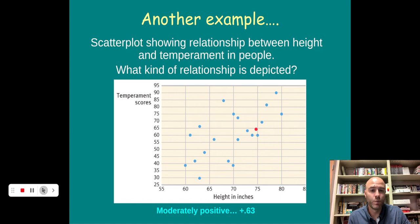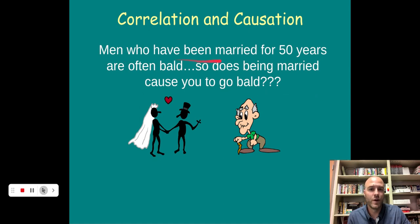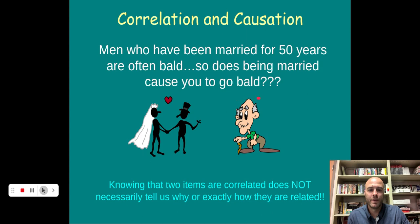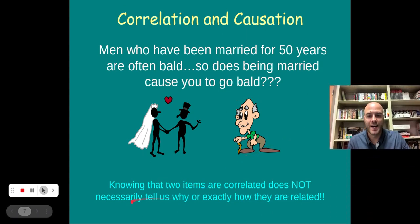But can we trust it? When we talk about correlation and correlational studies, there's always one thing we have to keep in mind, and that is correlation does not mean causation. We cannot claim that taller people have, just because you're taller, you're going to have a higher temperament score. We don't know that. There could be a third variable in there confounding our results. Another thing, men who have been married for 50 years are often bald. So does being married cause you to go bald? Maybe there's some third variables in there like age, genetics, things like that, that are causing this link between these two variables.